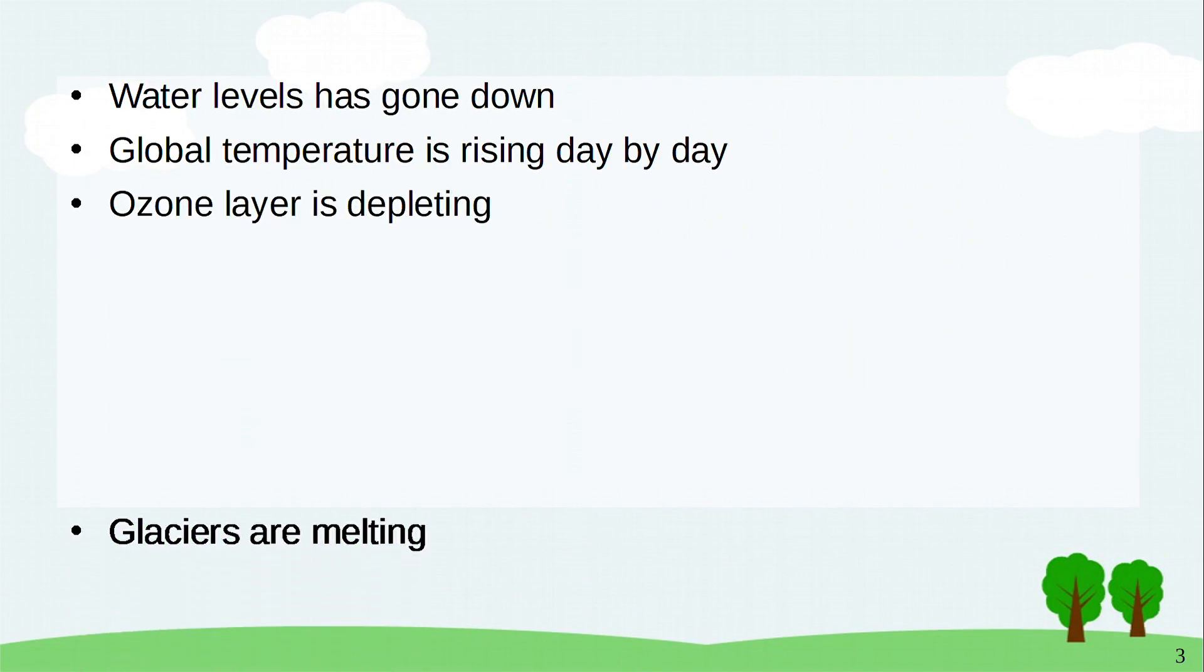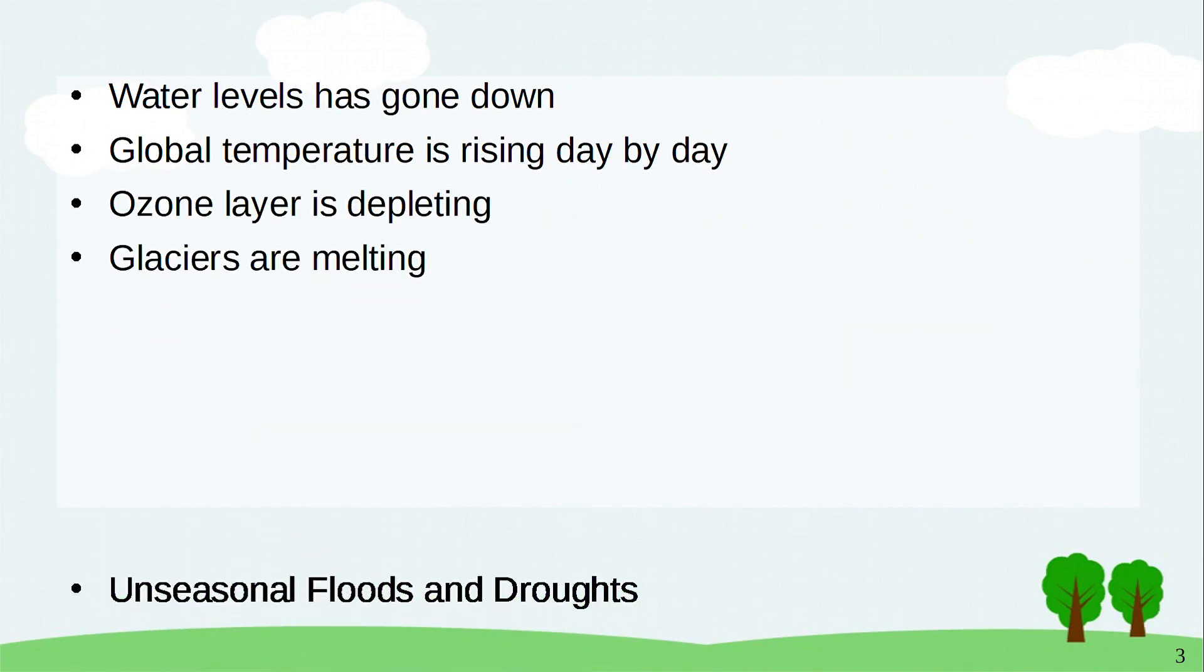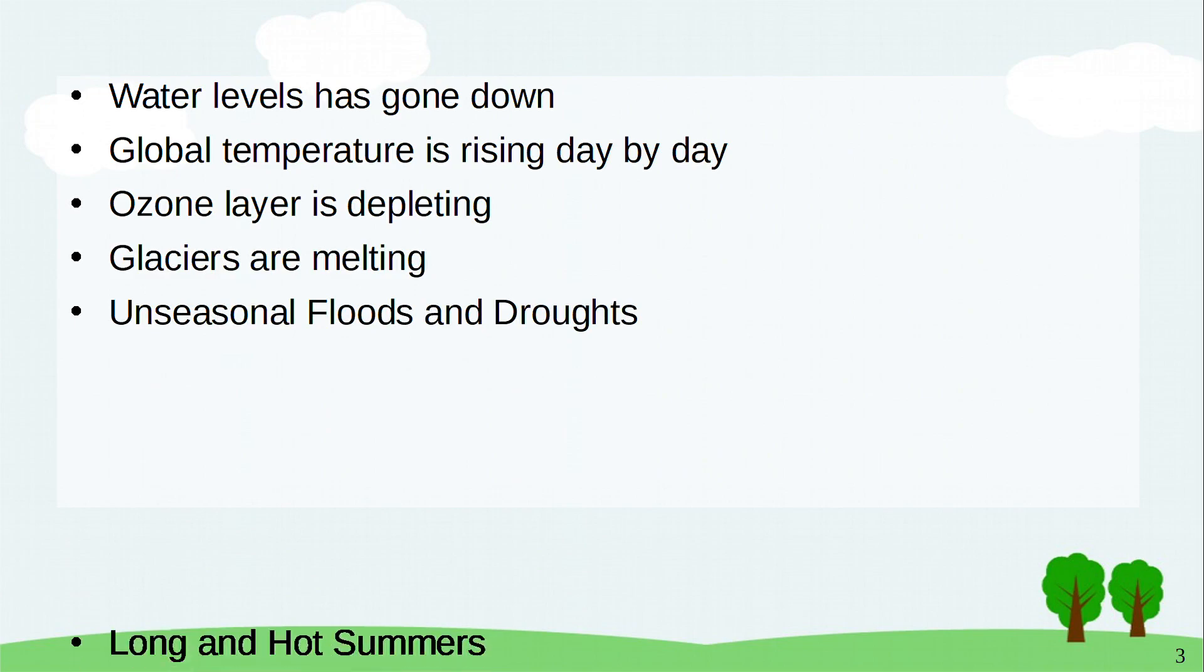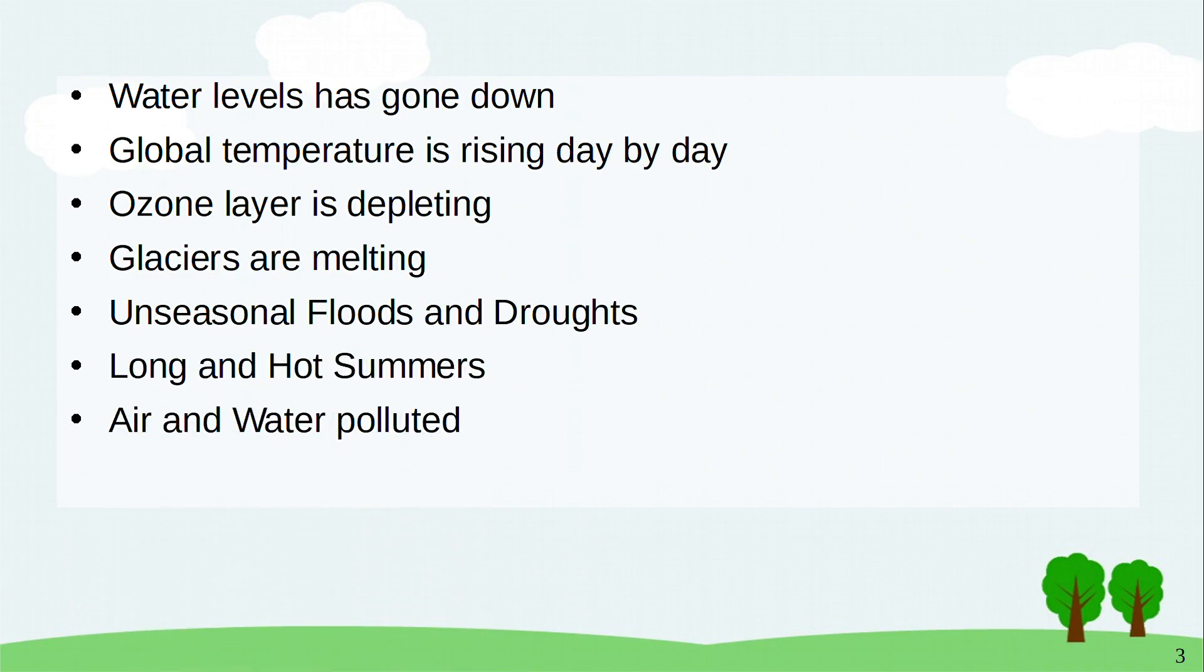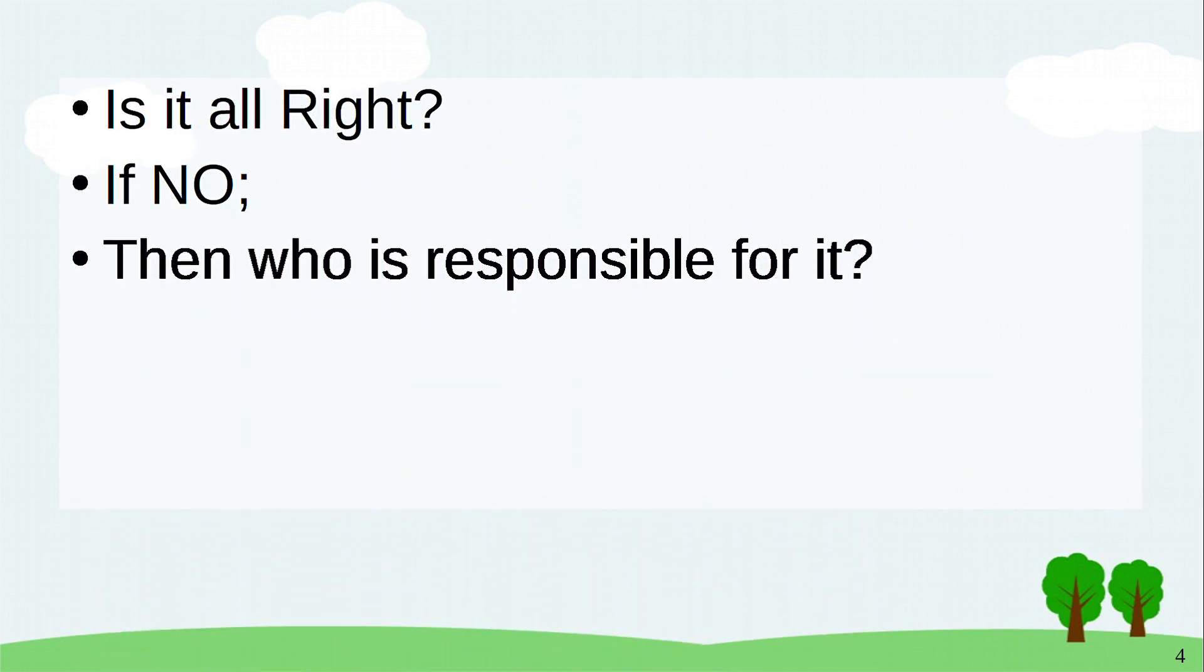Ozone layer is depleting. Glaciers are melting. Unseasonal floods and droughts. Long and hot summers. Air and water polluted. Deadly diseases becoming common. Is it all right? If no, then who is responsible for it?